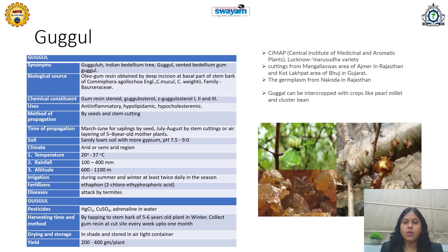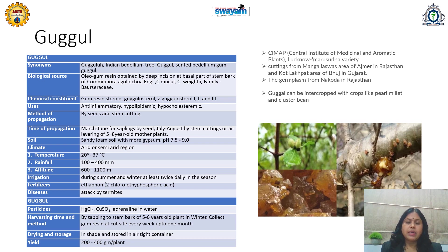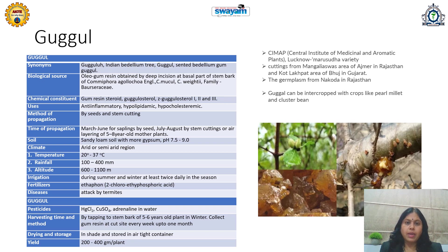Germplasm from Nakoda in Rajasthan is also utilized. Gugul can be intercropped with crops like pearl millet and cluster bean. This plant has many benefits — it is used in Indian rituals, traditionally in prayers, and medicinally it is very useful for treatment of inflammation and heart diseases.